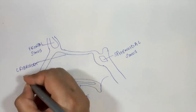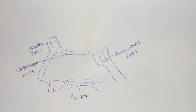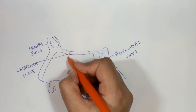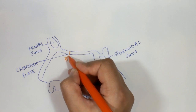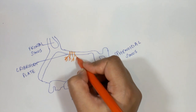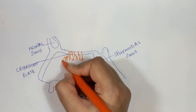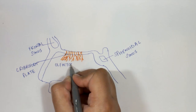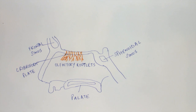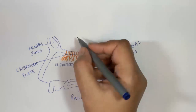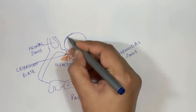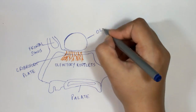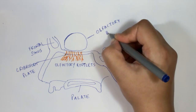The olfactory pathway begins with the olfactory rootlets. At their nasal end, these olfactory rootlets have the olfactory cells which pick up the smell, and they continue posteriorly as the olfactory nerves. The olfactory nerves pass through the perforations in the cribriform plate and enter into the olfactory bulb.